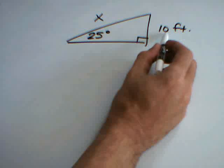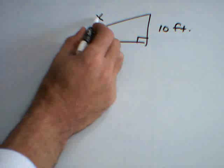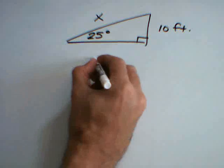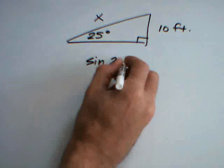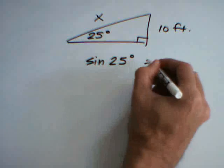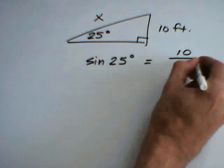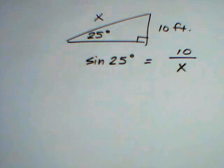Since we have the opposite side and the hypotenuse, we want to use the sine of the angle. The sine of the angle is equal to the length of the opposite side divided by the length of the hypotenuse.